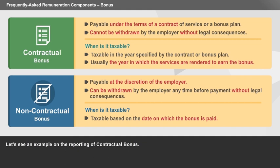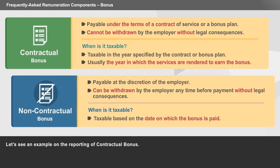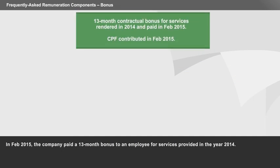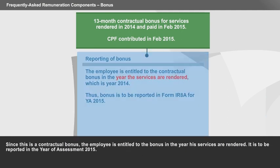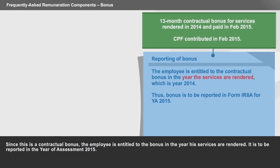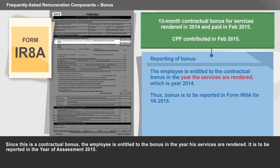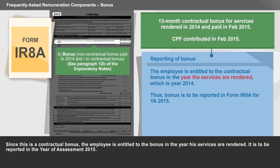Let's see an example on the reporting of contractual bonus. In February 2015, the company paid a 13-month bonus to an employee for services provided in the year 2014. Since this is a contractual bonus, the employee is entitled to the bonus in the year his services are rendered. It is to be reported in the year of assessment 2015.